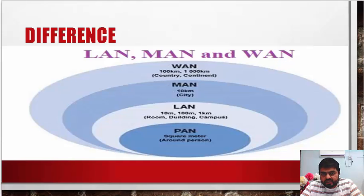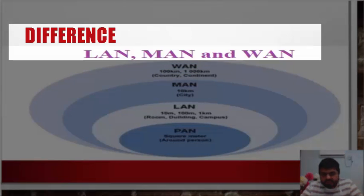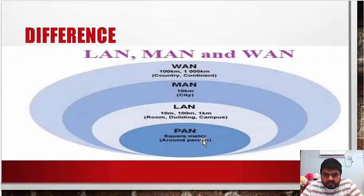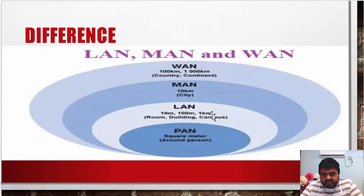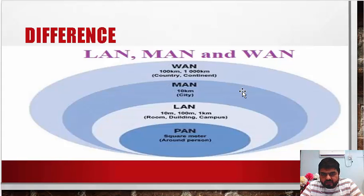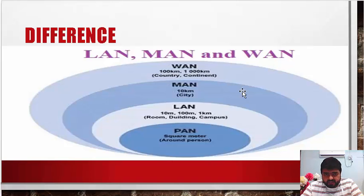In local area network, metropolitan area network, and wide area network, a diagram clearly shows the differences between these three. There is also PAN — personal area network — which is basically a kind of wireless network; Bluetooth is an example of a personal area network. LAN comprises a network inside one room, one building, or a college campus. Metropolitan area network means connectivity between two cities. Wide area network means connecting one country to another country, or one continent to another continent — wide area network is essentially the internet.